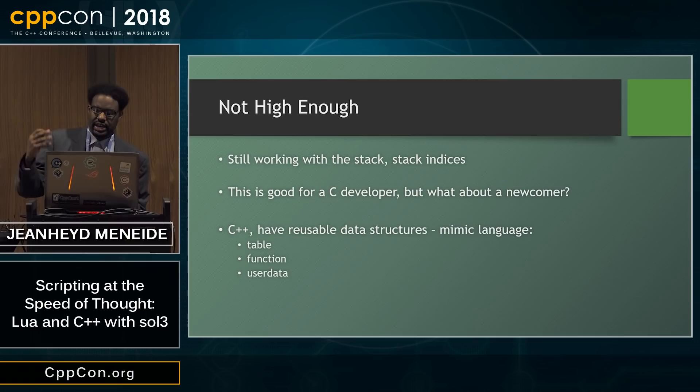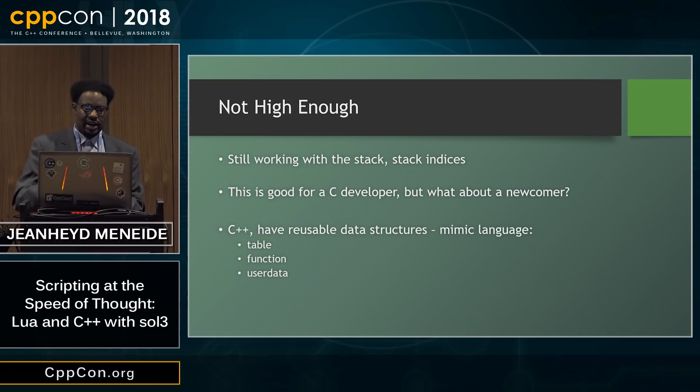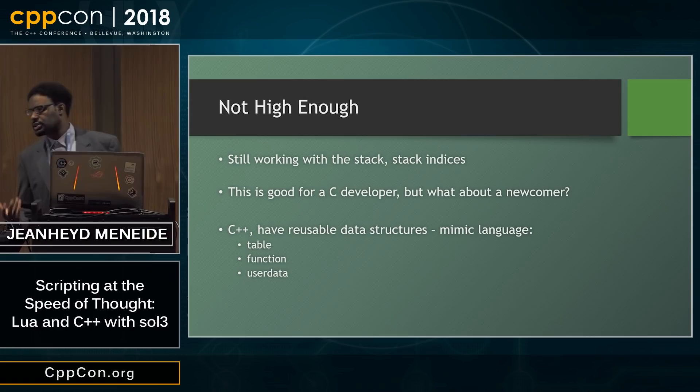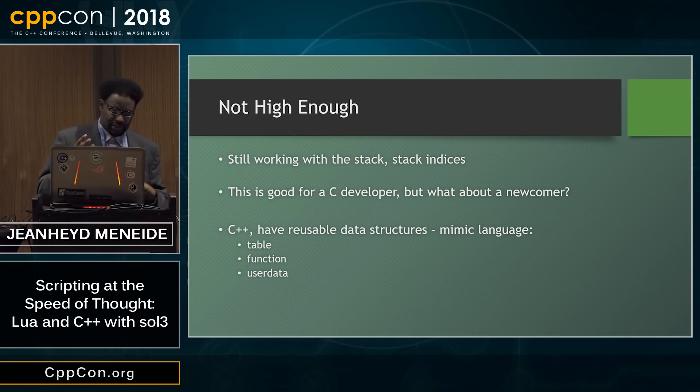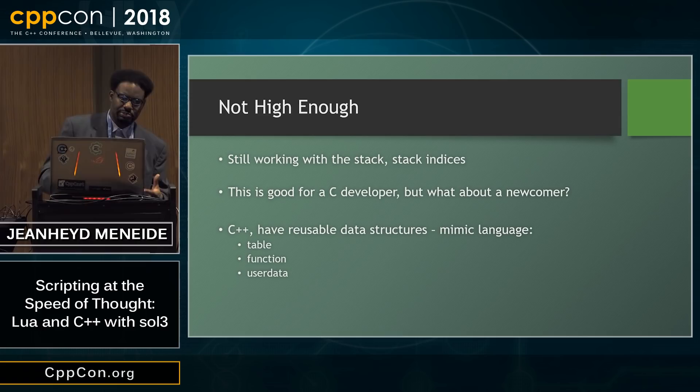The thing we showed is good for a C developer. We want to get a little bit higher than that in C++. We can have classes, we can have reusable data structures. So why don't we mimic some of the language that we see in Lua? It has tables, it has functions, it has user datas and user types that you can override and make behave like classes and things like that. So let's see if we can start getting some of those abstractions in our library so that we can wrap this up and start using it.